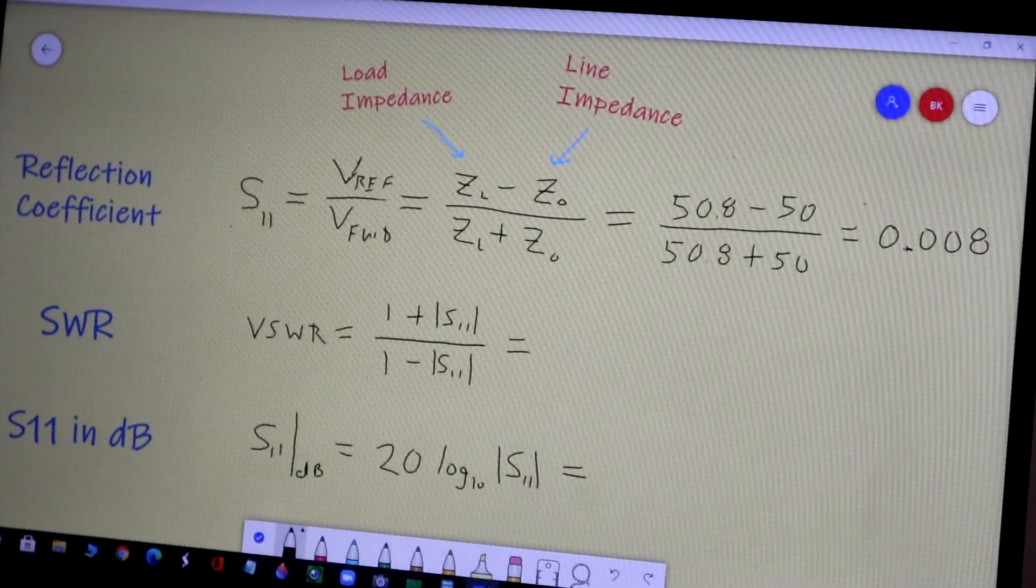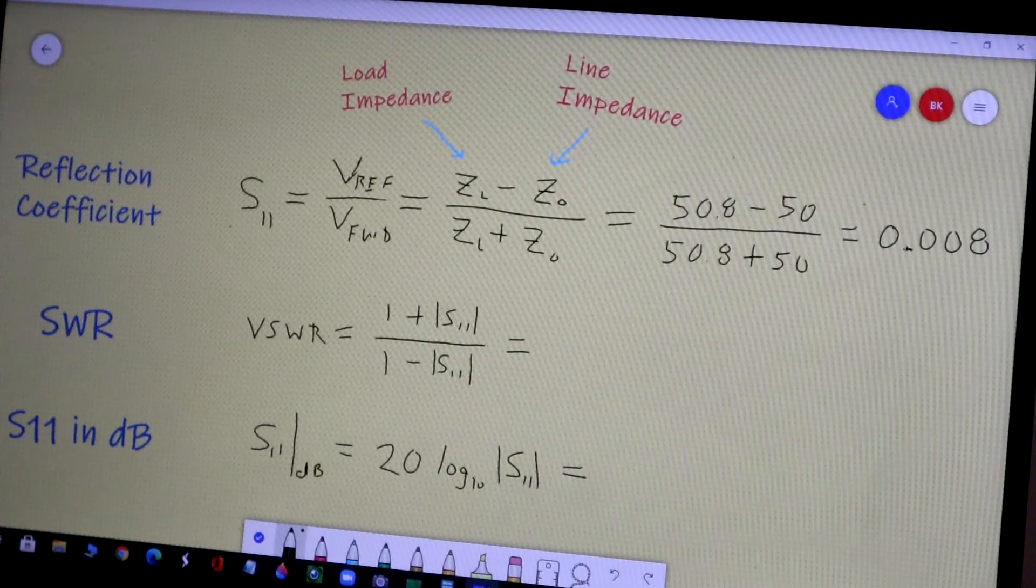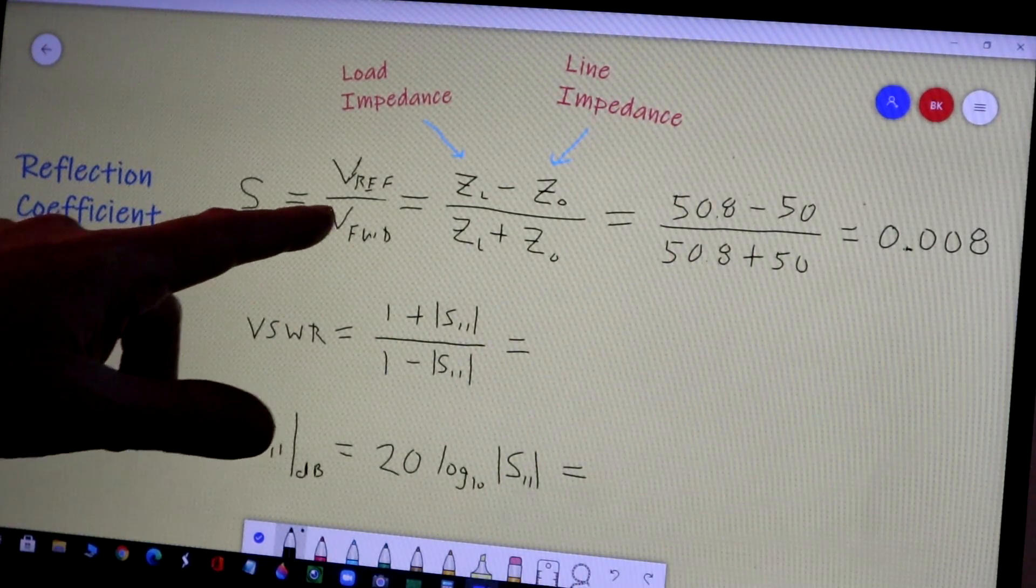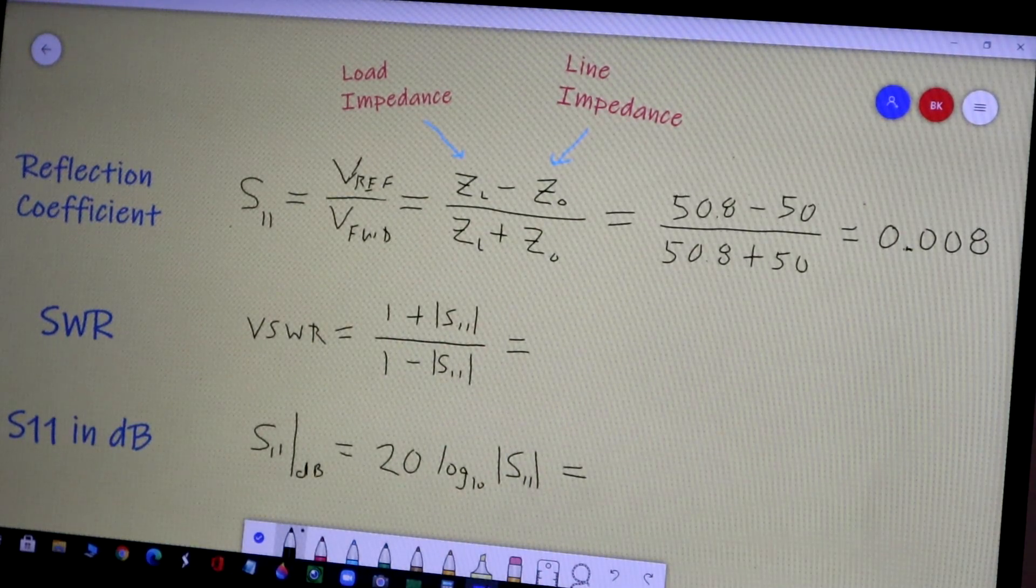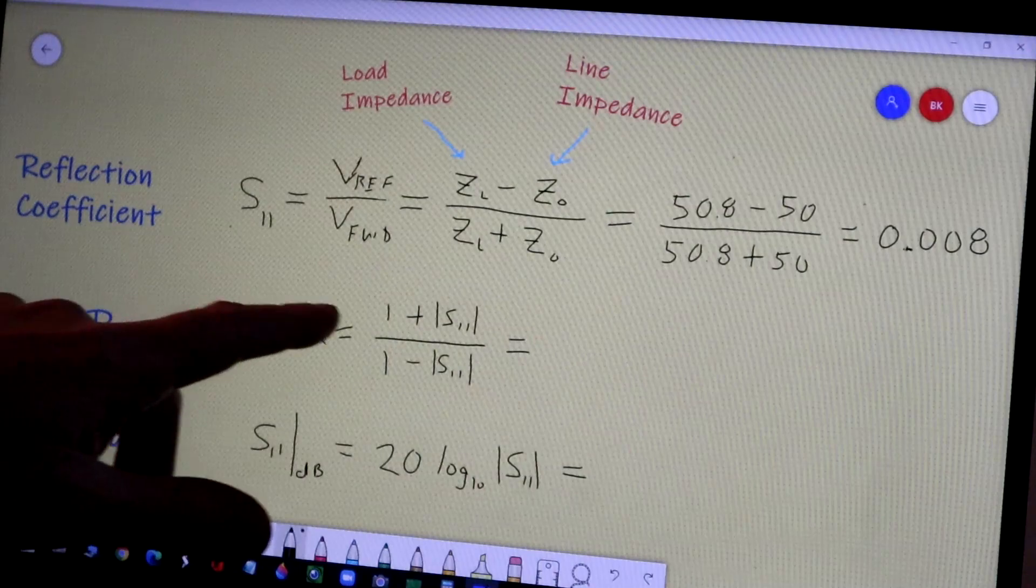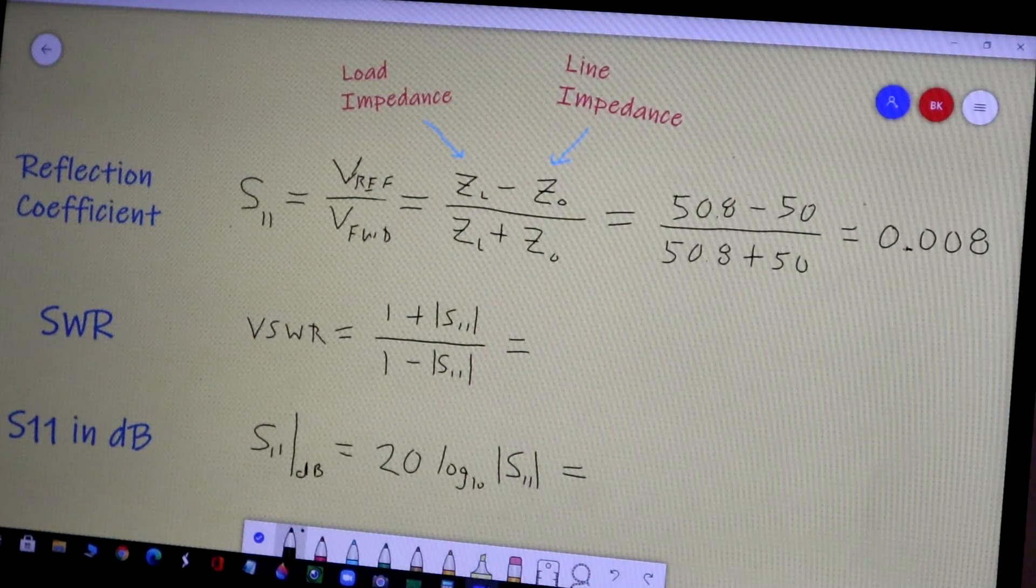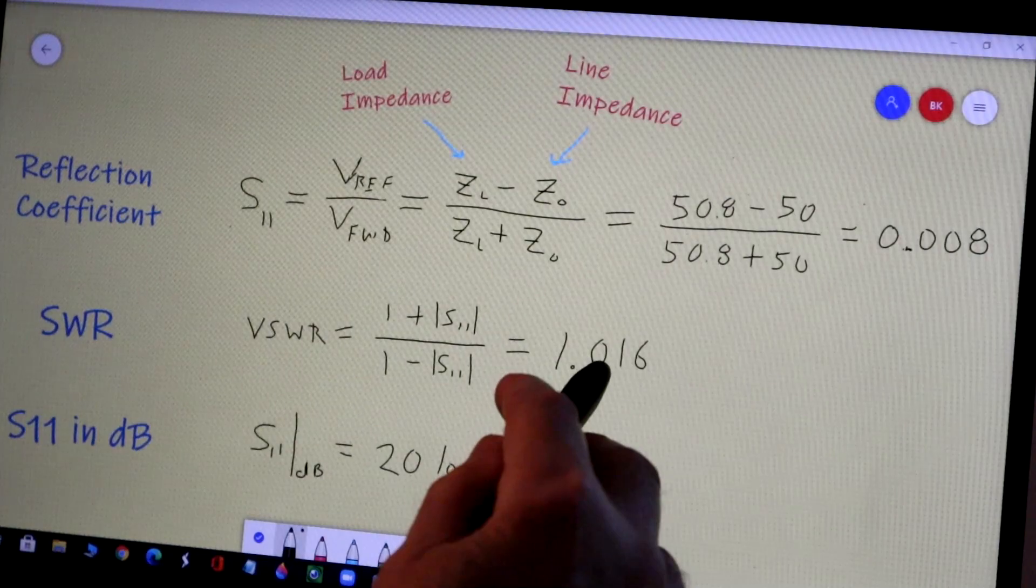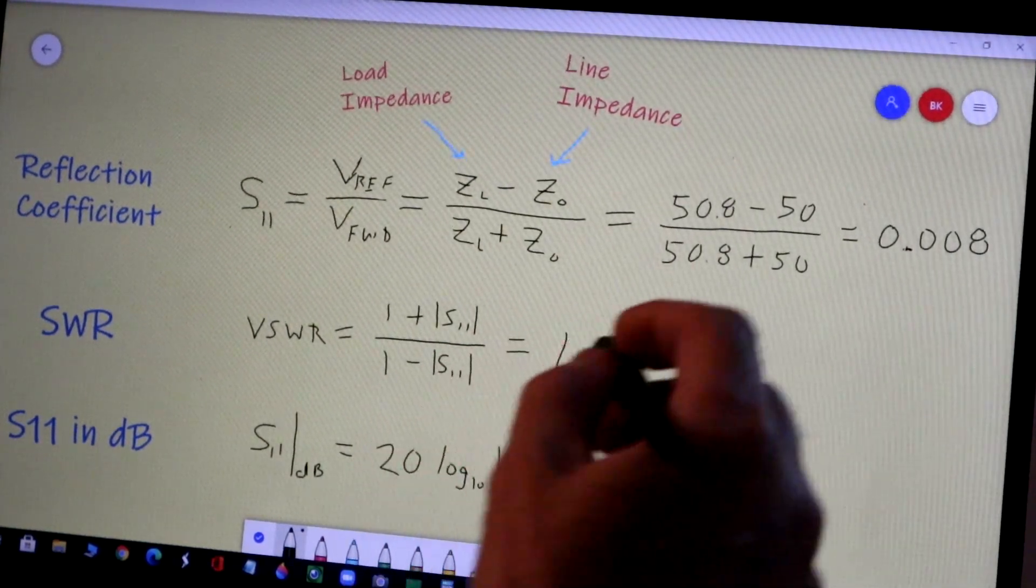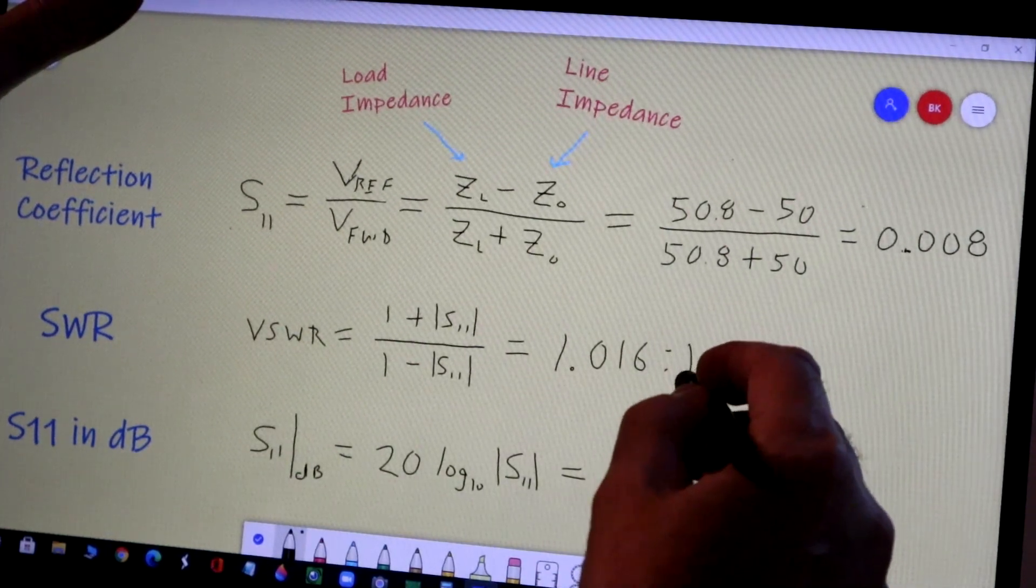Now some of us are more familiar with the standing wave ratio. That's a historically important measurement. It's not used as much these days but it can be related to the reflection coefficient through this formula. Here I called it the voltage standing wave ratio which you'll hear sometimes. So it is 1 plus 0.008 divided by 1 minus 0.008, and that works out to be 1.016.